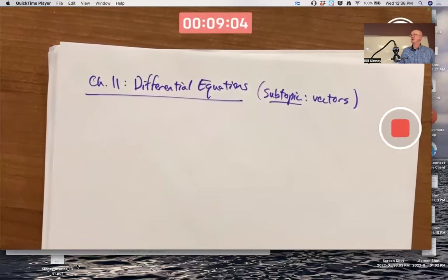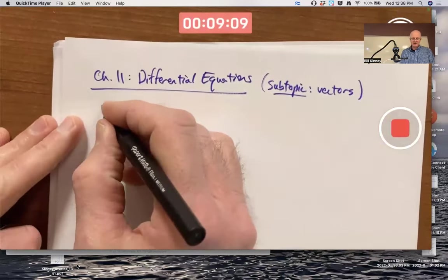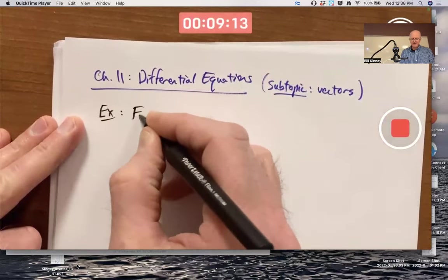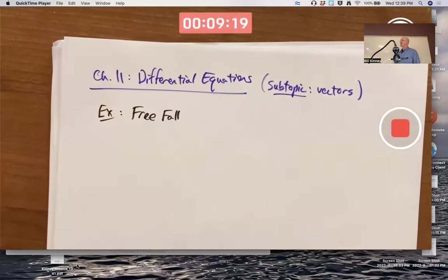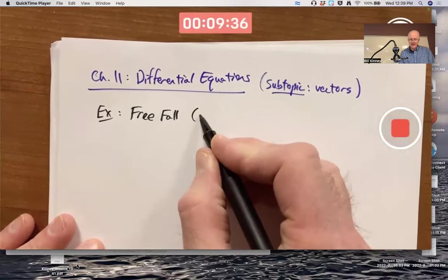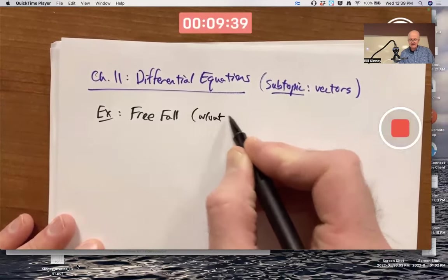I think it's best to introduce differential equations by talking about examples. So here's an important example from physics: freefall. Initially we'll do it without air resistance because that's simpler, but I would like to try to get some air resistance-related models into this, and that'll definitely help those of you who take differential equations next year.